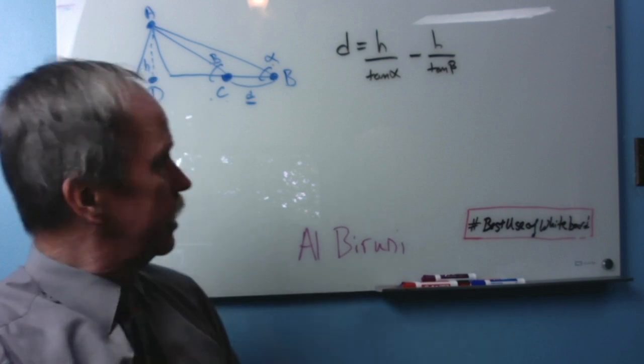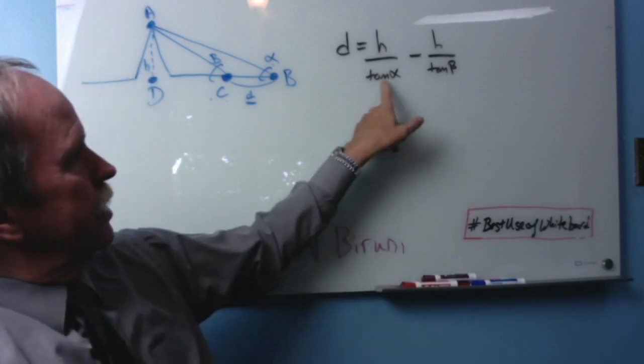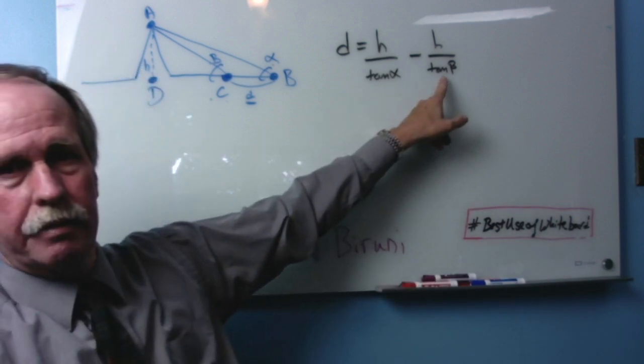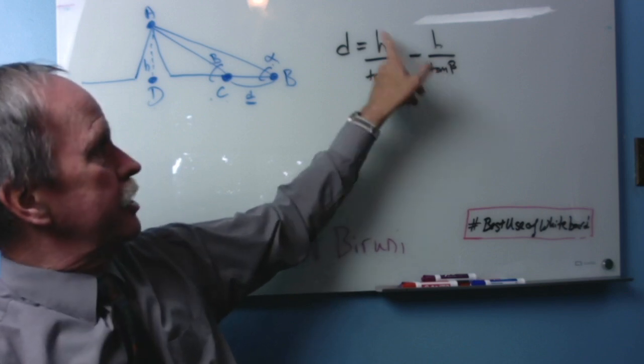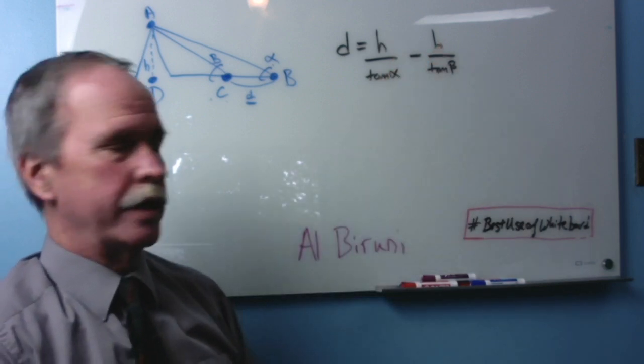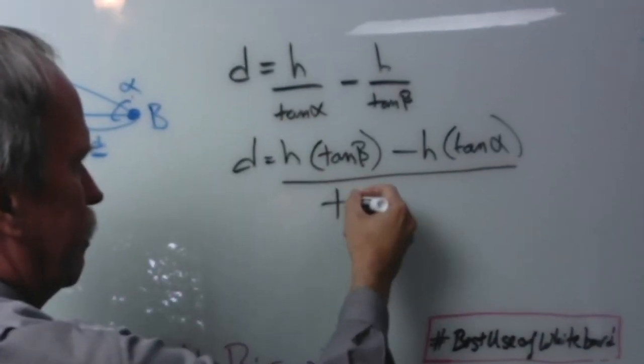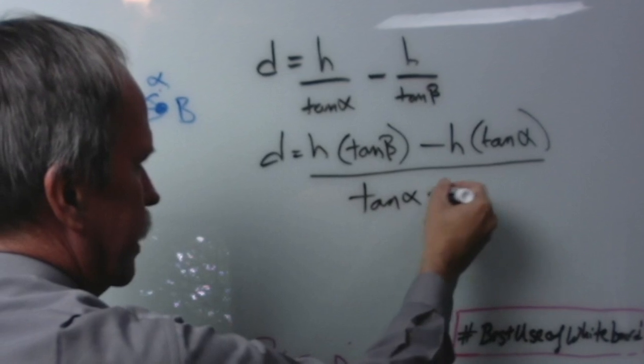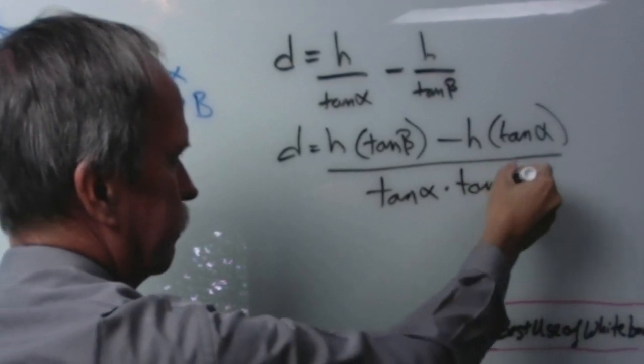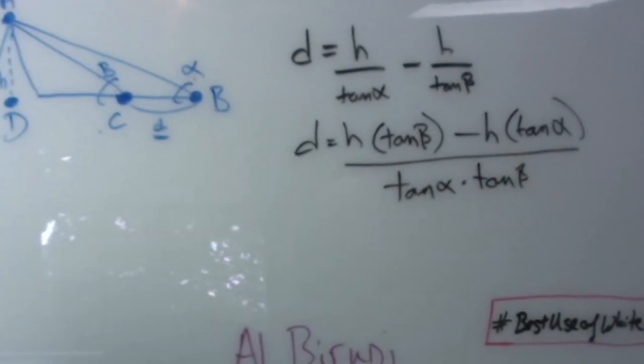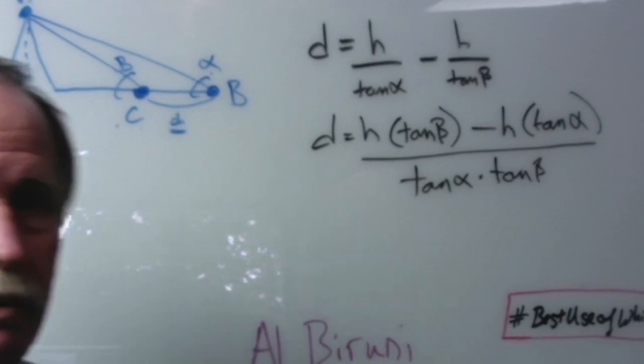So let's go ahead and do that. Now the first thing that we have to do is we have to get a common denominator. And the easiest way to do that is basically cross multiply. So let's go ahead and do that. And of course that will make it over tan alpha times tan bravo. Now we're cooking with gas.